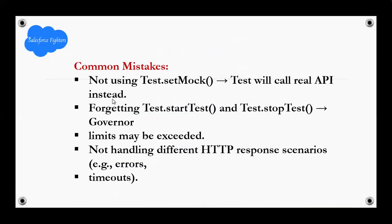Common mistakes: not using Test.setMock() — the test will call the real API instead. Forgetting Test.startTest() and Test.stopTest() — governor limits may be exceeded. Not handling different HTTP response status codes, such as timeouts.